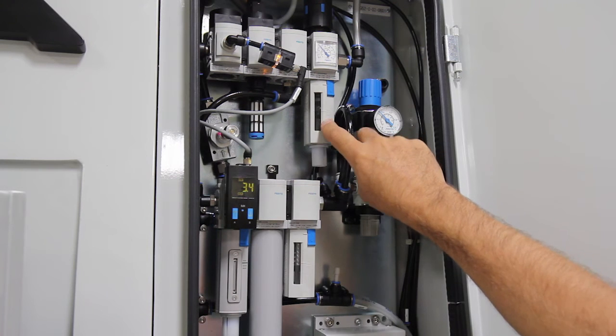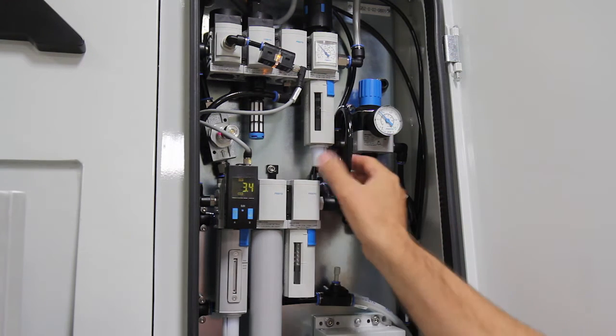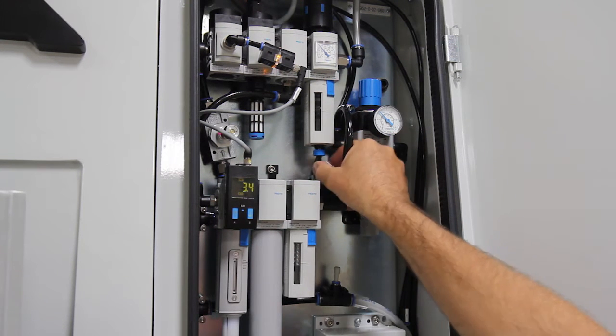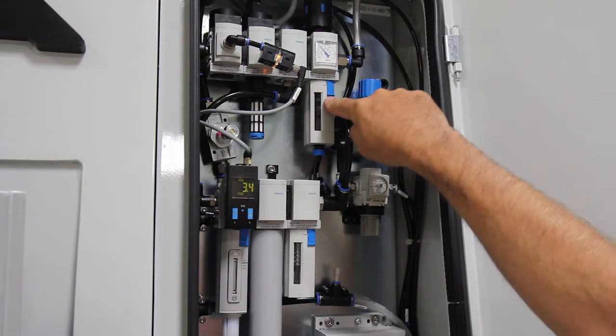Manual draining can be achieved by turning the blue knob under the removable cover to discharge any built-up coolant.